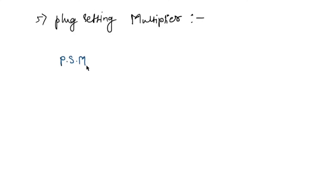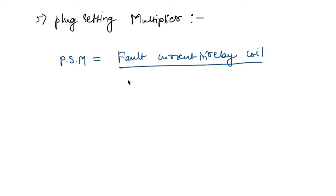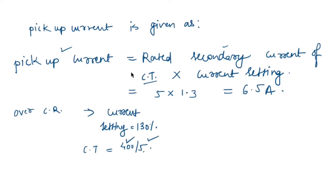The next terminology is plug setting multiplier, or PSM. PSM is defined as the ratio of the fault current in the relay coil to the pickup current. The formula is: fault current in relay coil divided by the rated secondary current of the CT multiplied by the current setting.